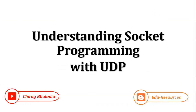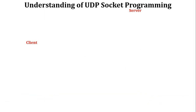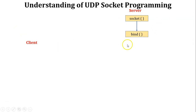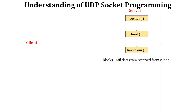Now let's understand socket programming with UDP. The flow of a UDP socket program uses client-server architecture, with separate server and client programs. On the server side: first write the socket function to create a socket at the server side, then the bind function to bind the IP address and port number with the specific service running on the server. Next is the receive-from function, which blocks until a datagram is received from the client. Note that accept and listen functions are not used because UDP provides connectionless services.